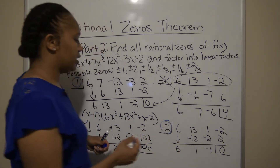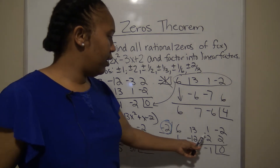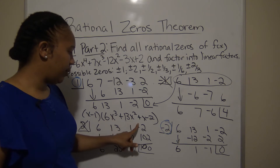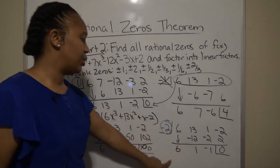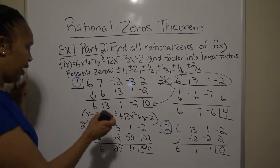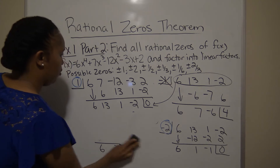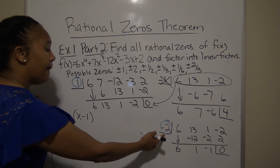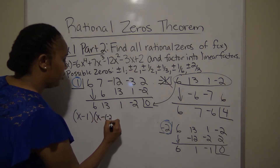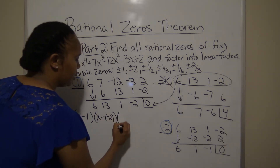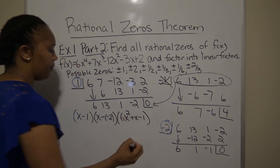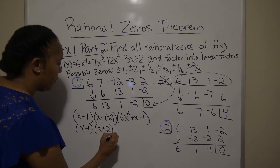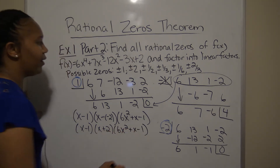So we've found two zeros: 1 and -2. Since -2 is a zero, (x + 2) is a factor. The remaining quotient row is 6, 1, -1, making the remaining factor 6x² + x - 1. So far we have factors (x - 1)(x + 2)(6x² + x - 1).